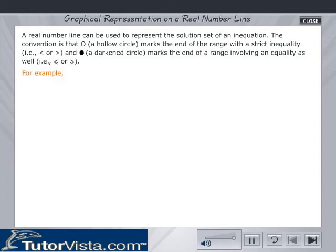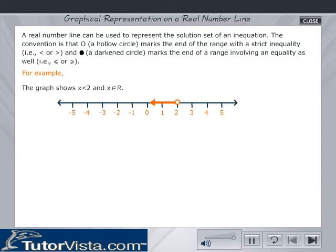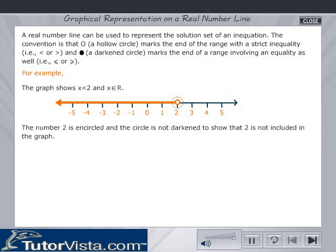For example, the graph shows x less than 2 and x belongs to R. Note that the number 2 is encircled with a hollow circle to show that it is not included in the graph.